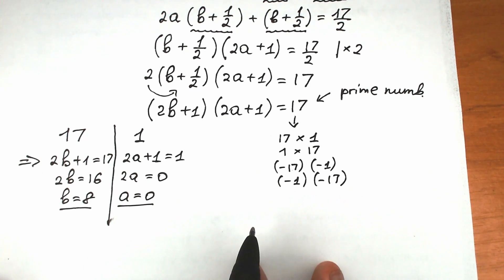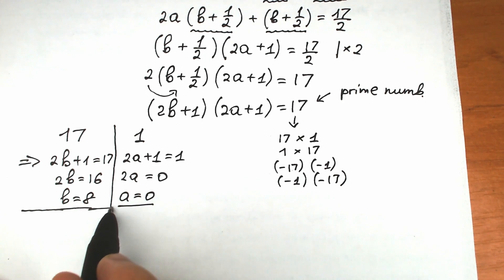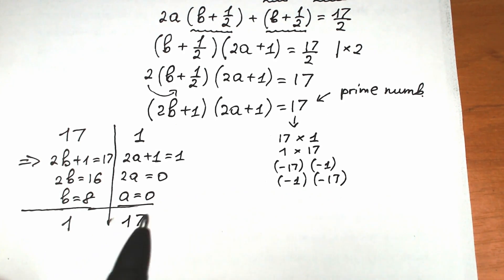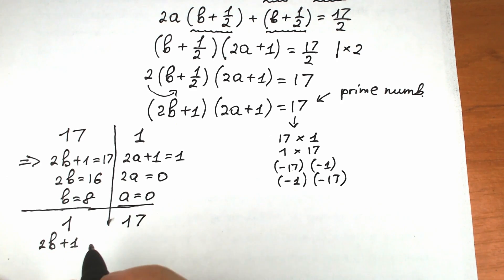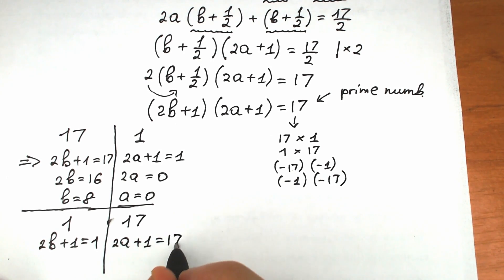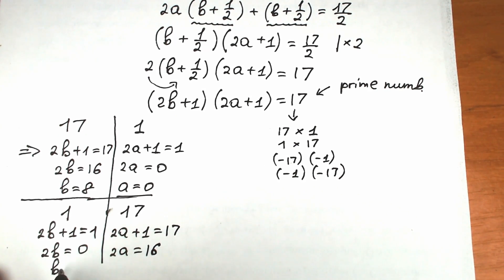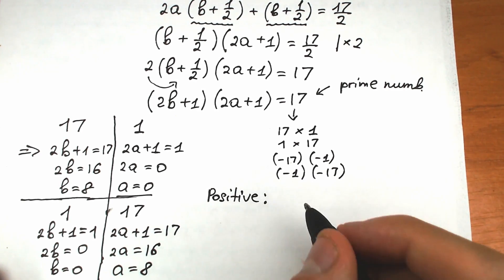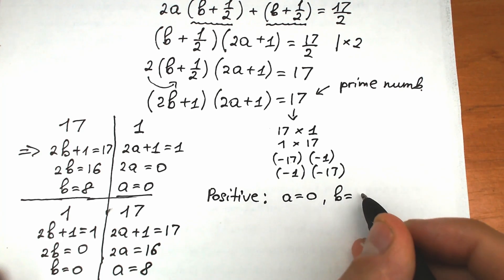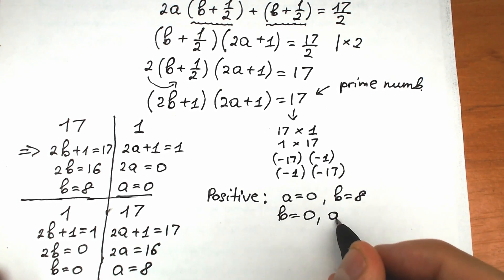Case 2: (2b+1) = 1 and (2a+1) = 17. Solving: 2b = 0, so b = 0; and 2a = 16, so a = 8. Our second solution is b = 0, a = 8.